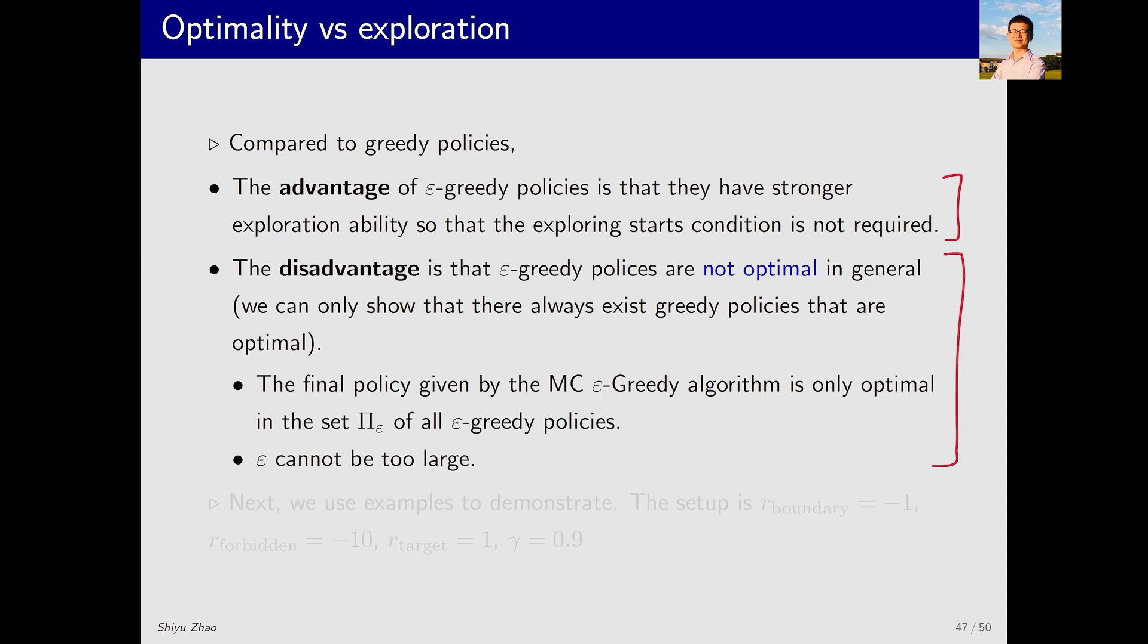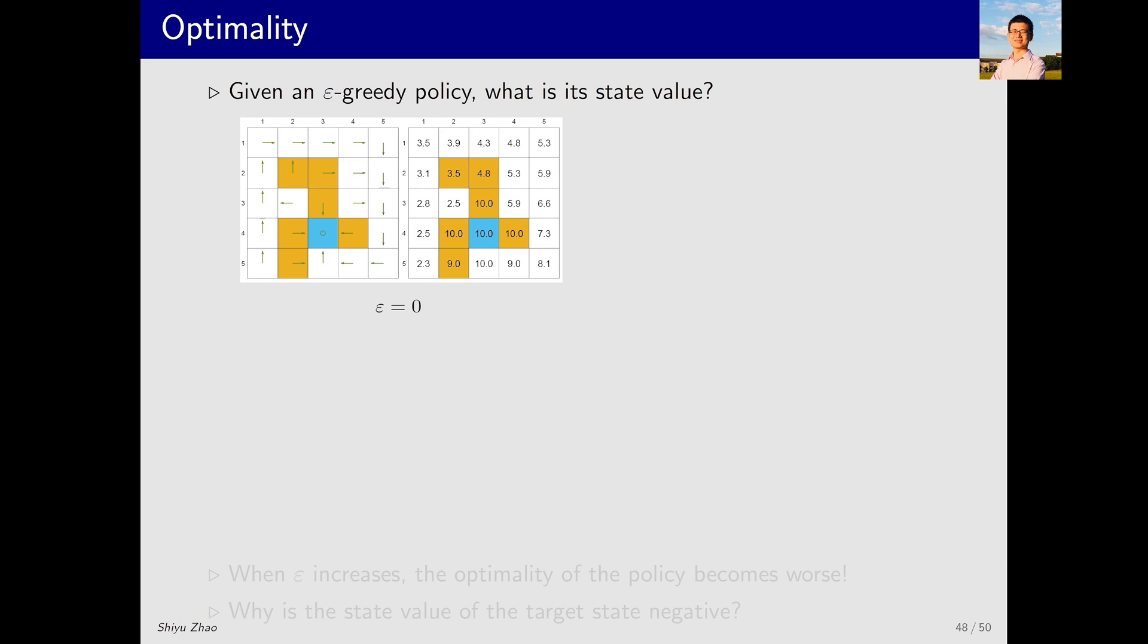In reality, we could also gradually decrease epsilon starting with a larger value to gain strong exploratory ability, and then reducing epsilon towards zero, ultimately achieving a policy that is optimal. Next, we use some other examples to illustrate the optimality of the epsilon greedy policy. In this example first, I present a policy and then solve its Bellman equation to obtain its state value.